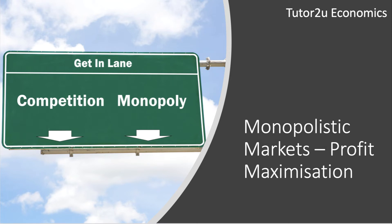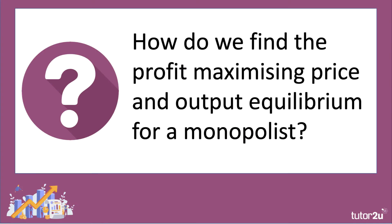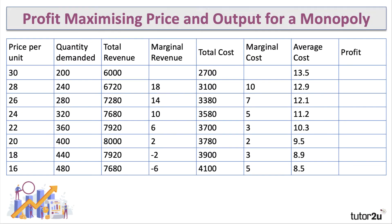Hello, welcome to the second in our new series of videos on monopolistic markets. In the first video we defined monopoly and looked at some data of industries where there's lots of market power on show. This video is analysis — we're going to take you through two ways of thinking about how a monopoly maximizes their profits. So how do we find the profit maximizing price and output equilibrium for a monopolist? Consider this demand, revenue, and cost data for a monopoly.